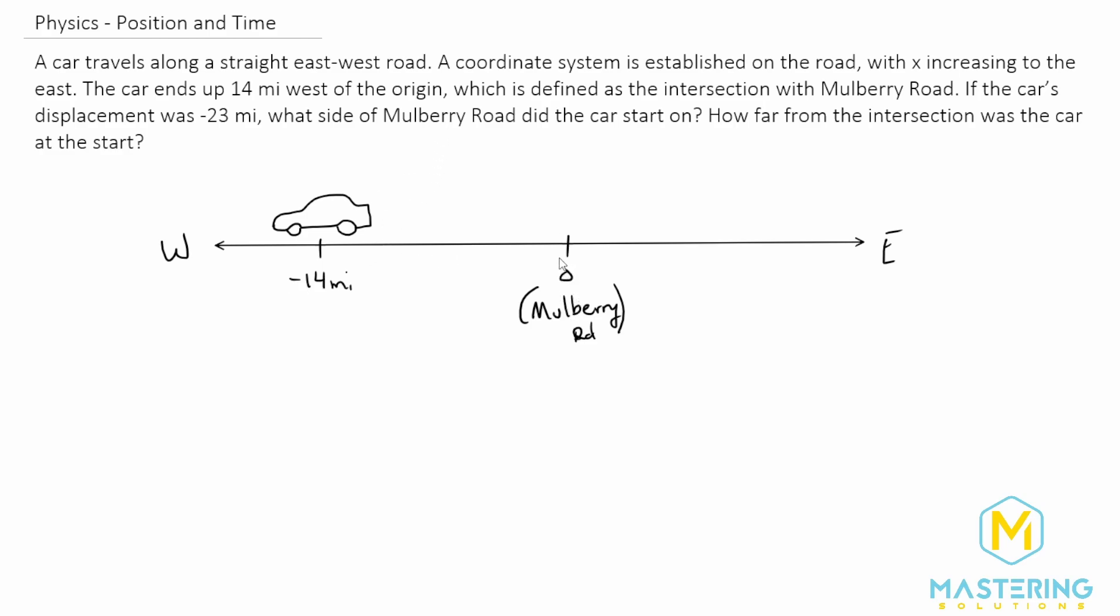If the car's displacement was negative 23 miles, so Δx equals negative 23 miles. They ask where did this car start? What side of Mulberry Road did it start on? We need to find x initial.